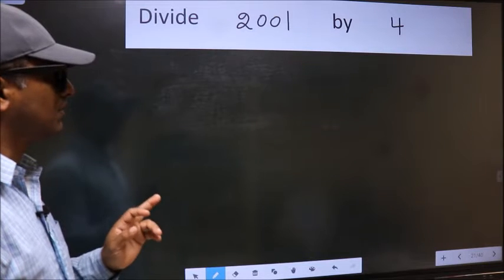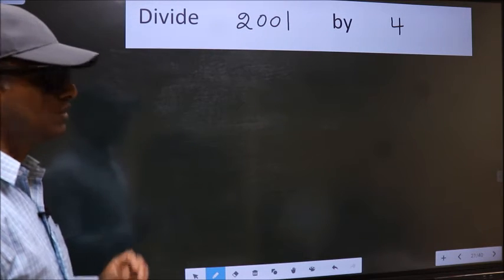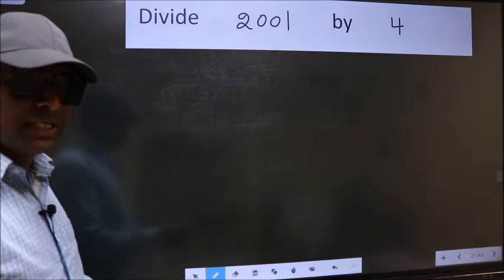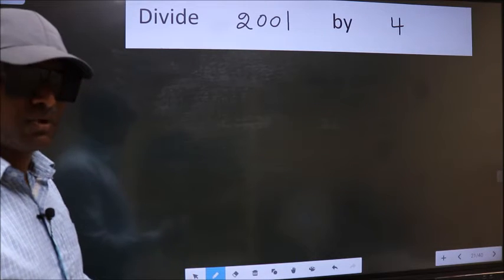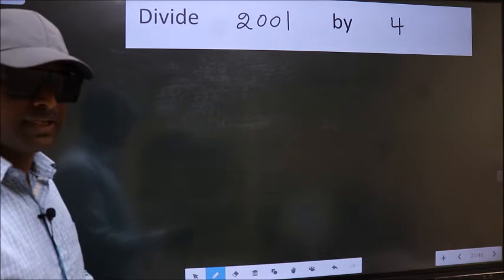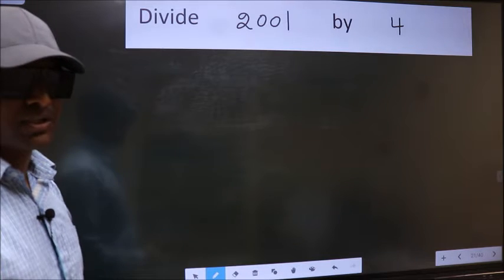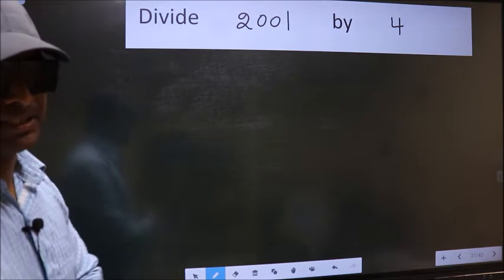Divide 2001 by 4. While doing this division, many do this mistake. What is the mistake that they do? I will let you know. But before that, we should frame it in this way.